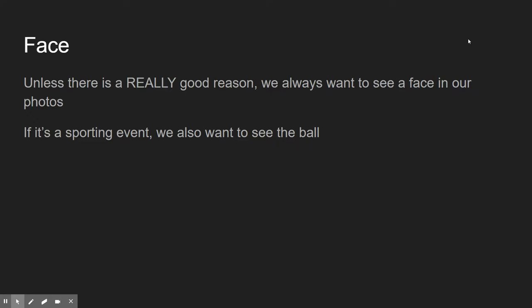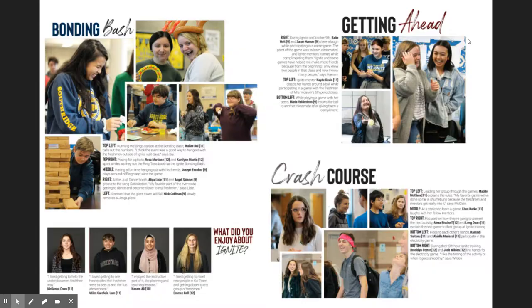Unless there's a really good reason, we always want to see a face in our photos. And if it's a sporting event, we also want to see a ball. Look at this page right here — every single photo, you can see the face of every person. With one exception, this person is turned slightly away, but it's part of the photo — she's talking to him and they're doing a thing together, so it almost makes sense. And in this photo, she's turned away just a tiny bit, but enough that we can see her.